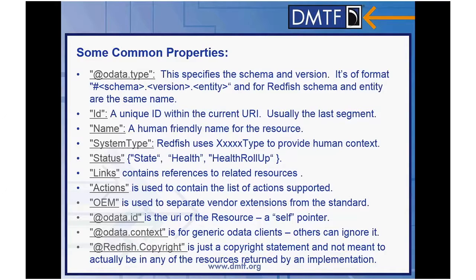We don't have a lot of normative context around that type property. Instead, it's really meant for humans and it's provided by the implementer. Status, on the other hand, is a very controlled object that you find in almost every resource. It has three properties within it: state, health, and health rollup. For health and health rollup, we try to follow the green, yellow, red model — so there are only three values for each of those, meant to show if the system is healthy, mediocre, or truly in error. State has everything from enabled to present or absent indicators. It's an enumeration as well, but it's leveraged in all of the properties, and because of that, not all enumerations are available in all resources.